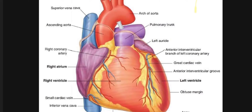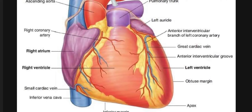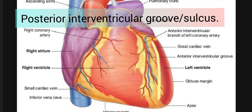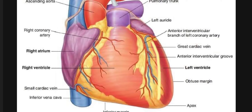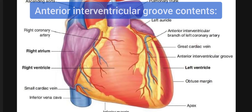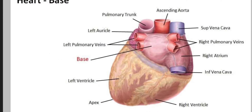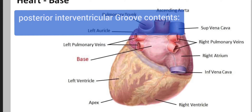As you can see in this diagram, we have the anterior interventricular groove and the posterior interventricular groove at the backside. In the anterior interventricular groove, we have the anterior interventricular artery, which originates from the left coronary artery, then the greater cardiac vein, and a layer of fat.